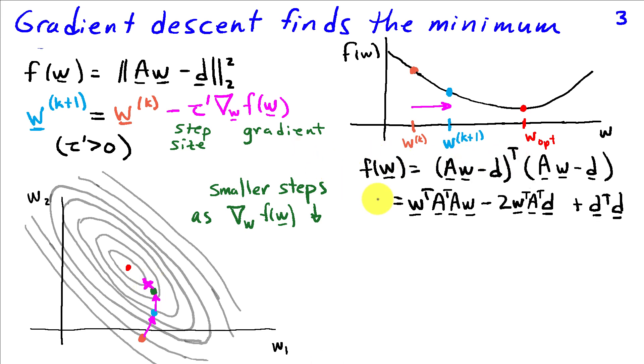So we can derive this analytically by noting that our cost function can be written as the transpose of this error vector times itself. And if we expand that out, we obtain w transpose a transpose aw minus 2w transpose a transpose d plus d transpose d. We can take the gradient of this with respect to w and that gives us 2 times a transpose a times w minus 2a transpose d. So we're going to factor out the 2a transpose and write this as 2a transpose times the error vector at w.